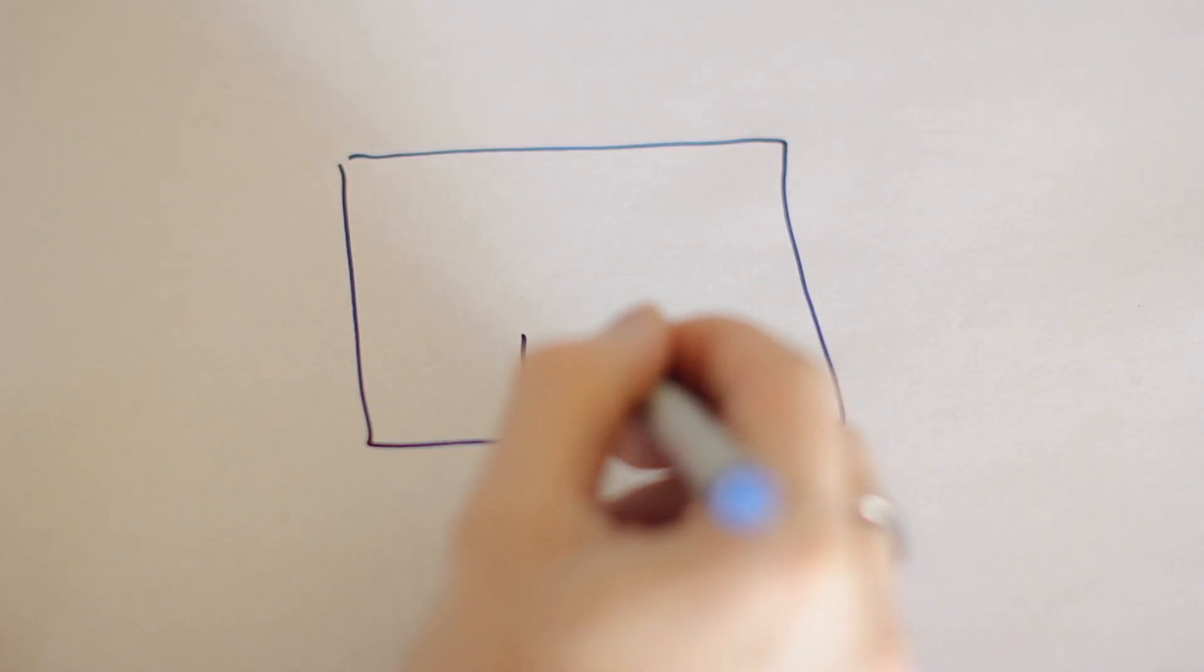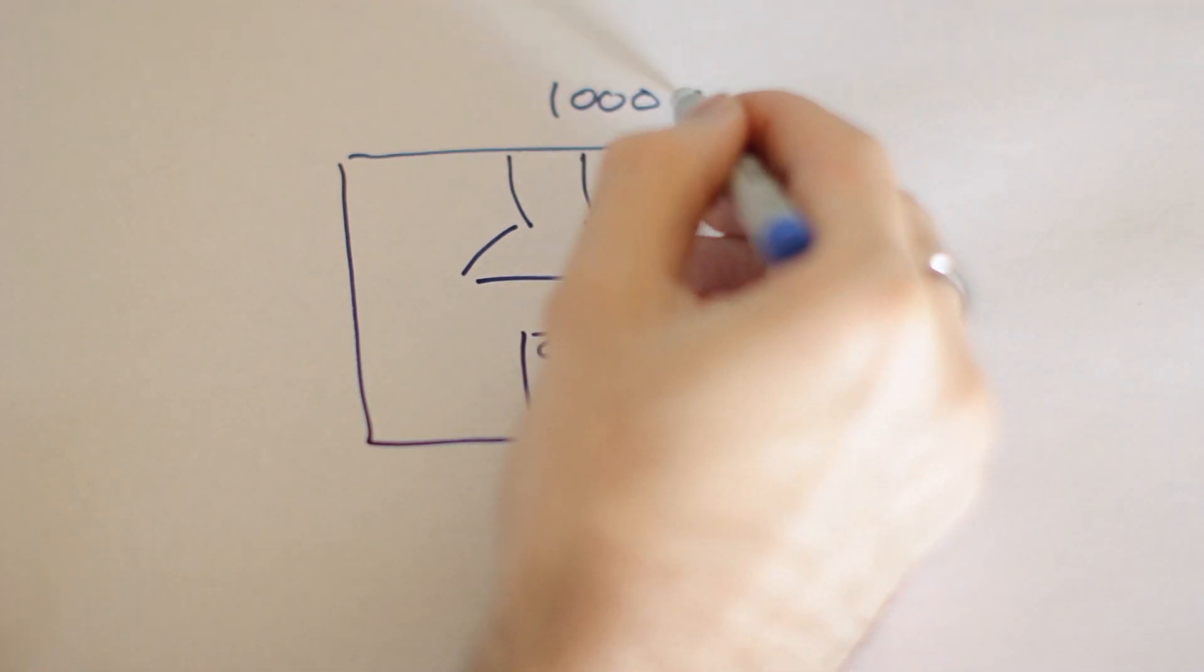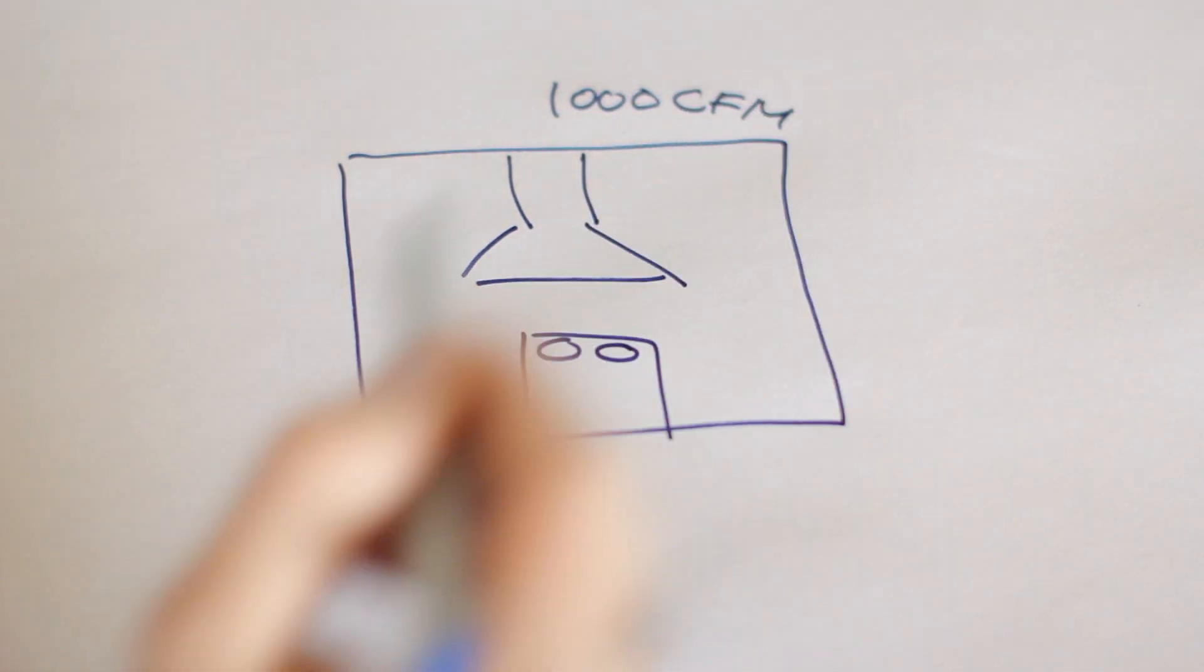Let's say you're beginning a kitchen upgrade project which includes a powerful Thermador, DCS, or Wolf gas range, and the manufacturer recommends a 900 or 1000 CFM exhaust system. We can provide you with a powerful exhaust vent, but before you purchase your powerful hood, you should know the following.